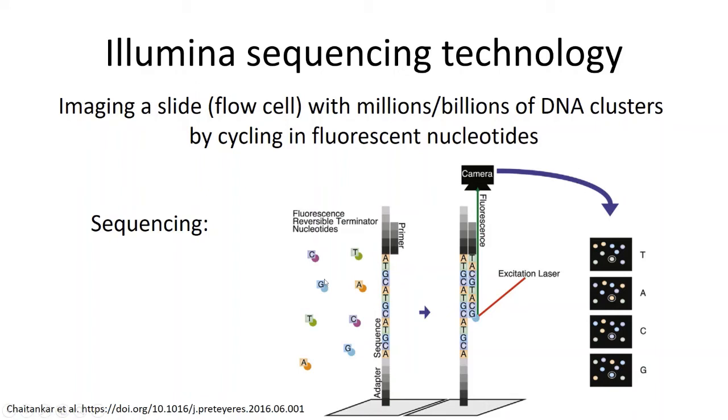So for each cycle, the nucleotides are flowed in, one nucleotide is incorporated, and then between two and four images are taken of the slide at different laser wavelengths in order to figure out which fluorophores correspond to which cluster.